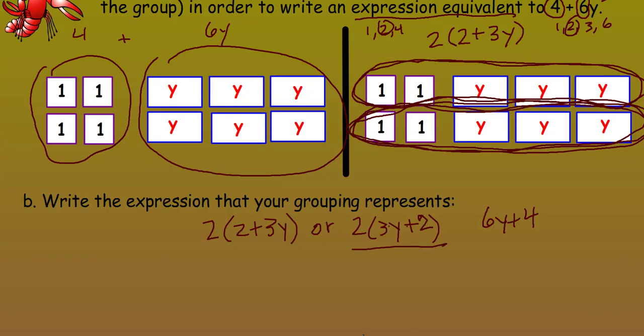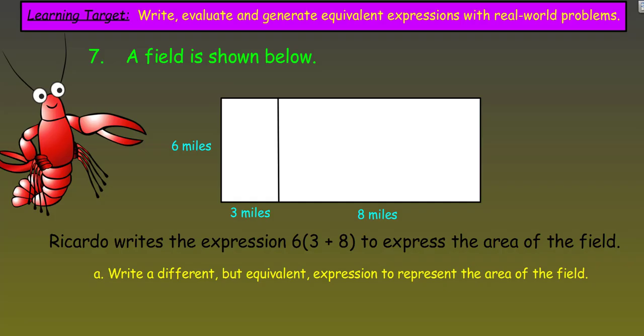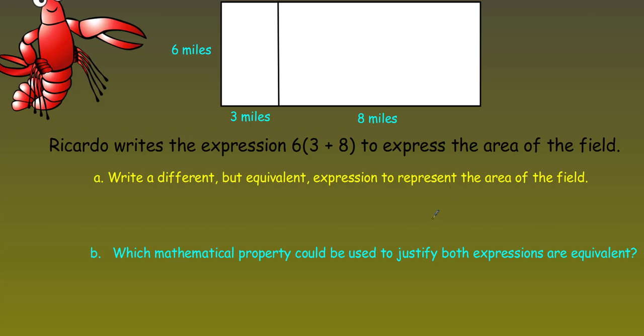Next problem. Number seven. That Lonnie guy, he's like on every single page. Number seven says, a field is shown below. Ricardo writes the expression six times the sum of three and eight to express the area of the field. Write a different but equivalent expression to represent the area of the field. Well, we just did the distributive property, didn't we?